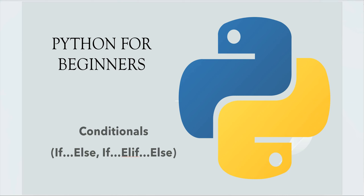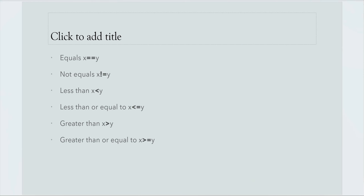Before we start with the if-else construct, let's have a look at a few of the commonly used logical conditional statements. The first one is equals — whenever you want to compare two things for equality you use double equals. For not equals, use exclamation with equal sign. For less than, use the angle bracket; for less than or equal to, append equals to the less than symbol. Similarly for greater than and greater than or equal to. All these conditions can be used frequently with if statements or with loops.